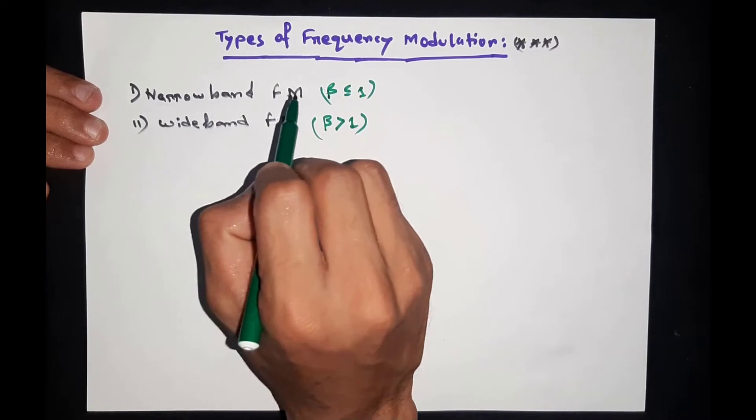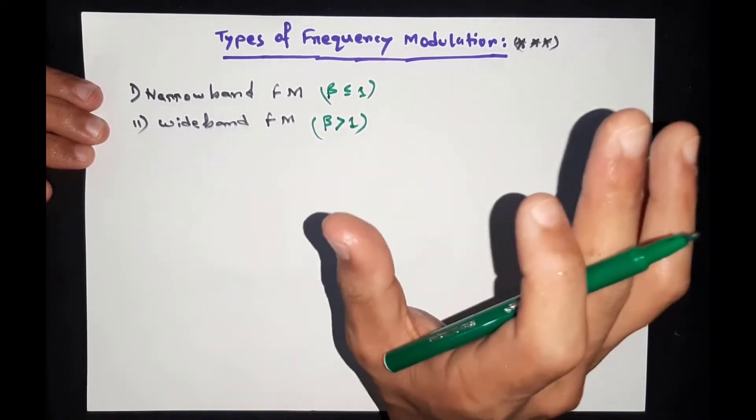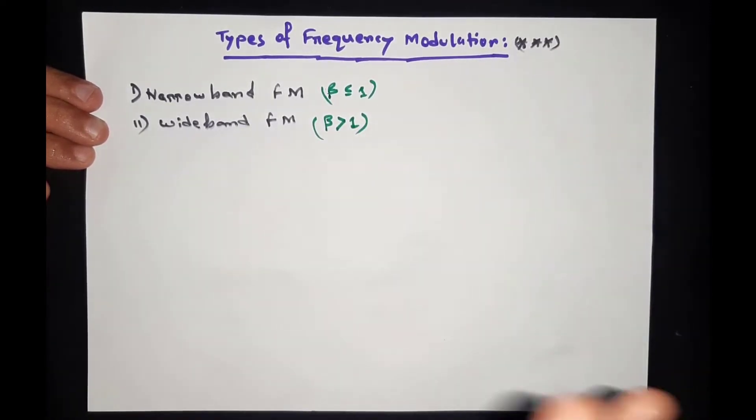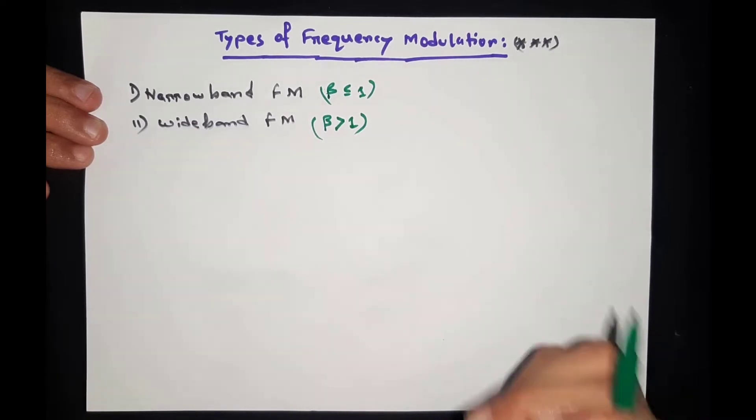Similarly, in narrow band frequency modulation, the carrier, upper sideband, and lower sideband are all present, but the lower sideband is reduced. This means efficiency is reduced, and the signal power delivered to the receiver is also reduced.